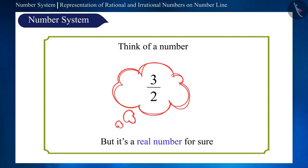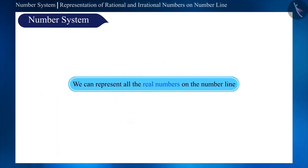This means that any random number that we can think of will always be a real number, and we can represent all the real numbers on the number line.